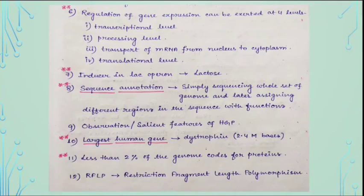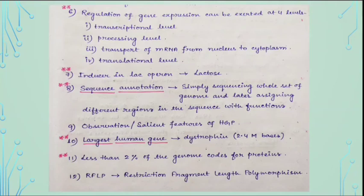Regulation of gene expression can be exerted at four levels: transcriptional level, processing level, transport of mRNA from nucleus to cytoplasm, and translational level. The inducer in the lac operon is the lactose molecule. Sequence annotation is simply sequencing the whole genome and then assigning functions to different regions. From the Human Genome Project: the largest human gene is dystrophin, with 2.4 million base pairs; less than 2% of the genome codes for proteins; and RFLP stands for Restriction Fragment Length Polymorphism.